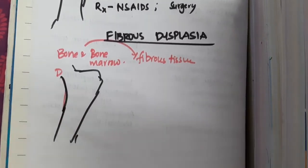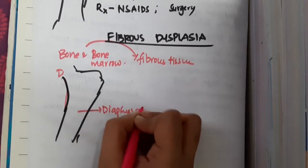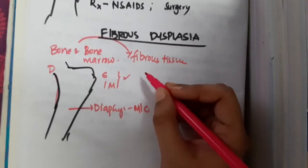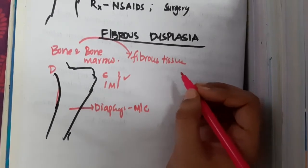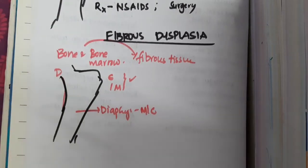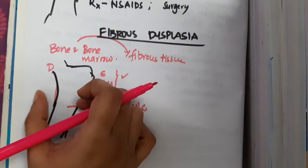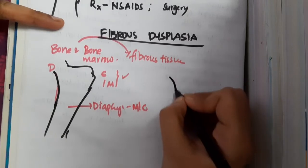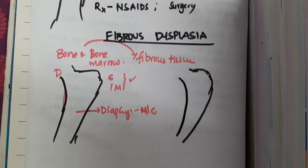Fibrous dysplasia most commonly occurs in the diaphysis, but it can also occur in the epiphysis and metaphysis. Because fibrous tissue grows within the bone, the bone becomes weak and bends, resulting in the characteristic bending deformity seen in fibrous dysplasia.